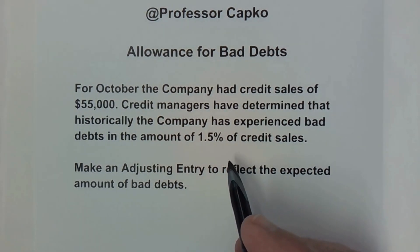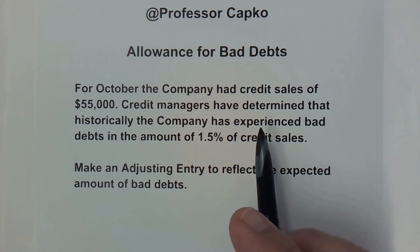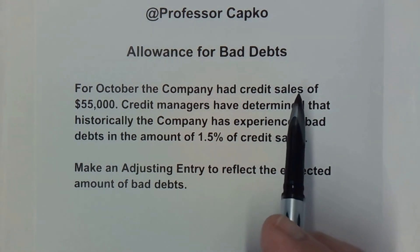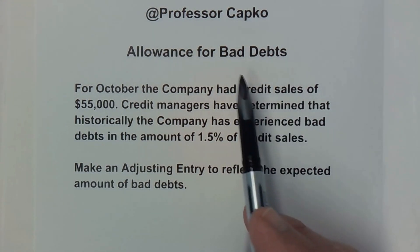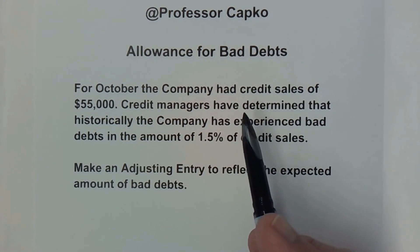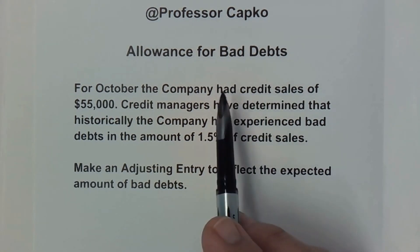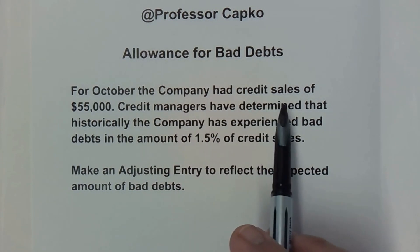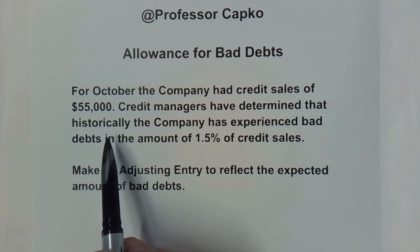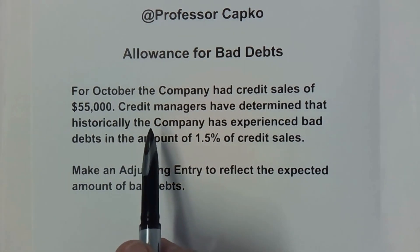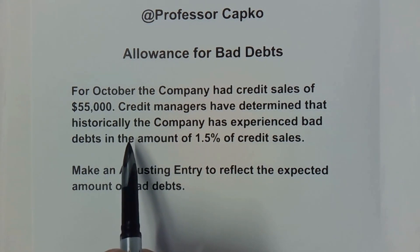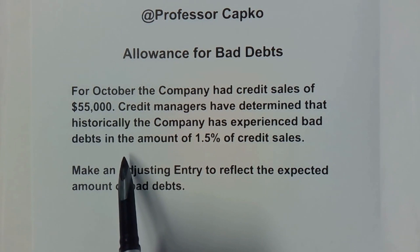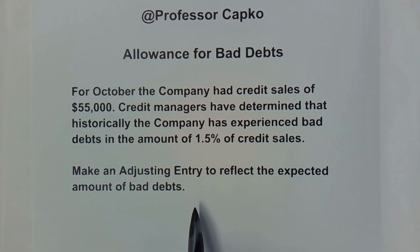In today's video we're going to do an adjusting entry for something called allowance for bad debts. Here's our scenario: for October the company had credit sales of $55,000. Credit managers have determined that historically the company has experienced bad debts in the amount of 1.5 percent of credit sales. Make an adjusting entry to reflect the expected amount of bad debts.